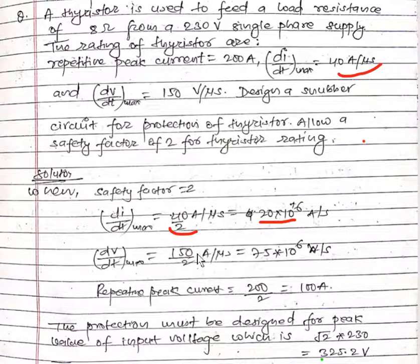Similarly dV/dt max will be 150 upon 2 ampere per microsecond, which means 75 × 10^6 volt per second. The repetitive peak current will be also divided by 2, so it will be 100 ampere.